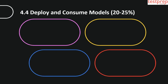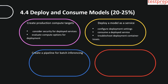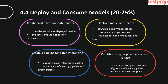Domain 4: Deploy and consume models, which comprises 20–25% weightage in the exam. It has four parts. First, create production compute targets — consider security for deployed services and evaluate compute options for deployment. Second, deploy a model as a service — configure deployment settings, consume a deployed service, and troubleshoot deployment container issues. Third, create a pipeline for batch inferencing — publish a batch inferencing pipeline and run a batch inferencing pipeline to obtain outputs. Fourth, publish a designer pipeline as a web service — create a target compute resource, configure an inference pipeline, and consume a deployed endpoint.